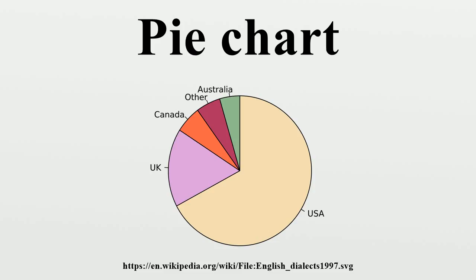The values in the last column — the derived central angle of each sector — is found by multiplying the percentage by 360 degrees. Because of rounding, these totals do not add up to 100 and 360. The size of each central angle is proportional to the size of the corresponding quantity, here the number of seats. Since the sum of the central angles has to be 360 degrees, the central angle for a quantity that is a fraction q of the total is 360q degrees. In the example, the central angle for the largest group is 135.7 degrees, because 0.377 times 360, rounded to one decimal place, equals 135.7.